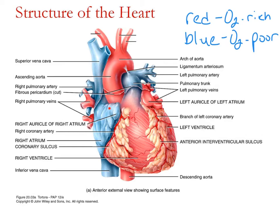These little flappy-looking things are called auricles — expandable pockets of each atrium that allow for expansion when they're filling with blood. This is the right atrium and this is the left atrium. The right ventricle, the left ventricle — and the interventricular sulcus is the dividing line between those two chambers. Up here is the right atrium, and the left atrium is around the back side.